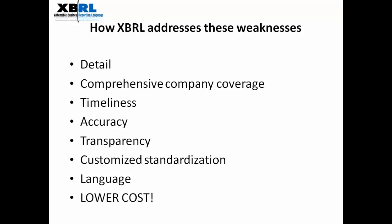XBRL makes a massive difference in this respect. Suddenly we have a lot more detail. Looking at the US SEC data, every item in the financial statements and in the notes is available as tagged data. Every company listed in the US is required to file XBRL and that data is made available immediately that the company files that XBRL tagged data. So you can immediately start analysis at the point at which it's available to everyone else. Accuracy should be good — and I emphasize the word should — because the data is coming directly from the company itself. But we'll come back to that in a minute.